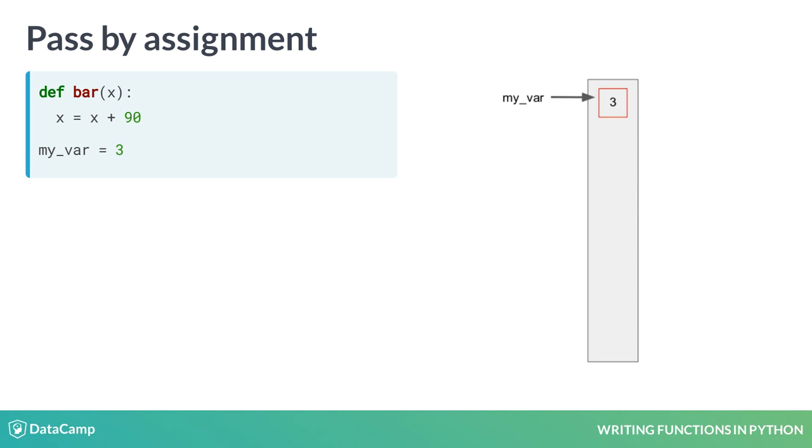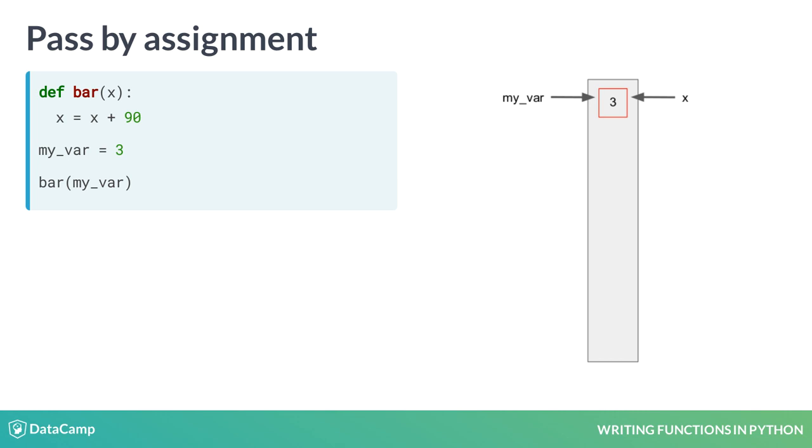In the other example, we created a variable myvar and assigned it the value 3. Then we passed it to the function bar, which caused the argument x to point to the same place myvar is pointing. But the bar function assigns x to a new value, so the myvar variable isn't touched.